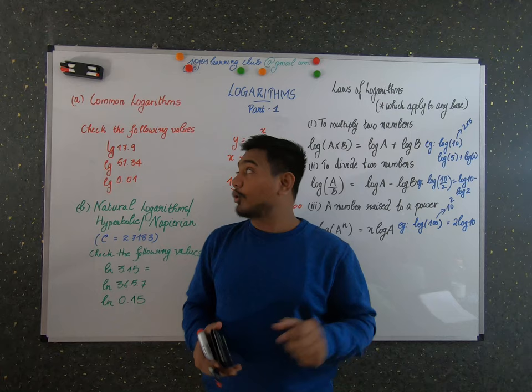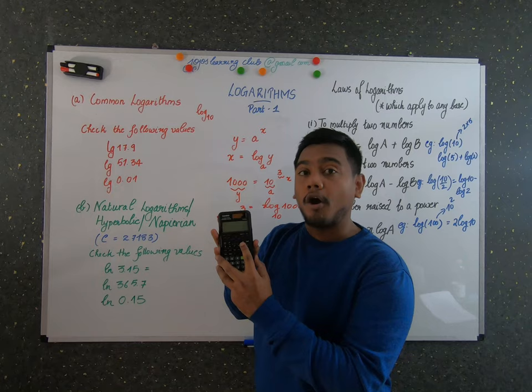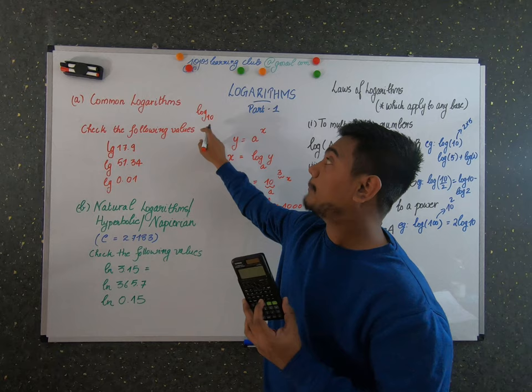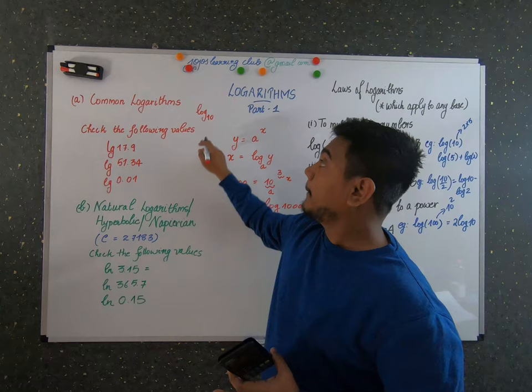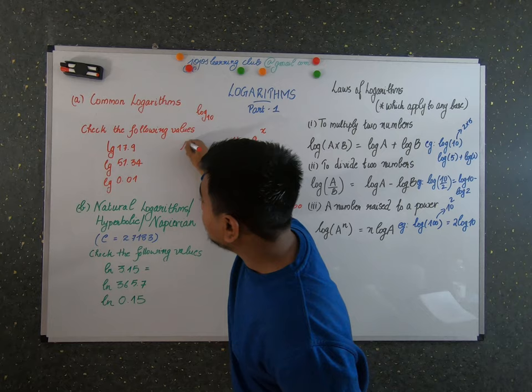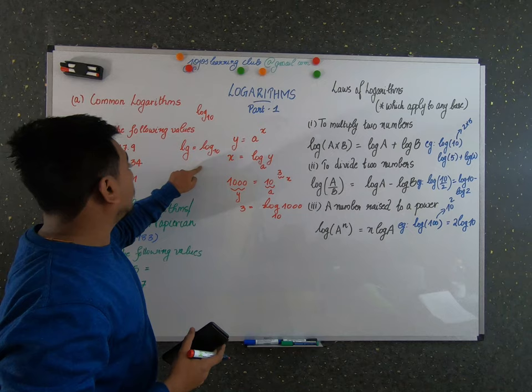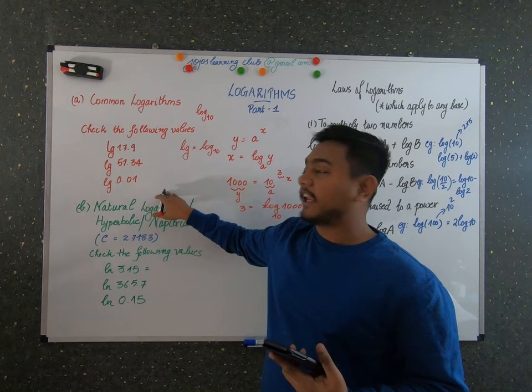When the base is 10, you write, for example, log base 10, and these are called common logarithms. This is shown in the scientific calculator as 'log', meaning base 10. In problem sections, common logarithms are abbreviated as LG. So when you see LG, understand that it is a logarithm to base 10.